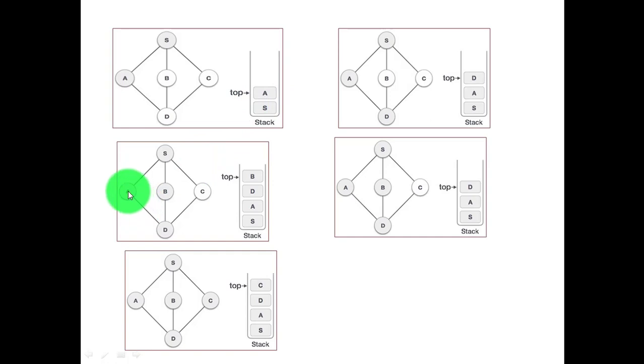For A, the adjacent node is D. S is already visited, but the unvisited adjacent node will be D, so we push D to the stack. Then for D, the adjacent nodes are either B or C. We can take any path. Suppose I'm considering this way, so I'm pushing B to the stack. Top is pointing to B now. The current top element is B. As B has no unvisited adjacent node, we need to pop up an element from the stack. So we'll pop B, and now we have D as our top element.